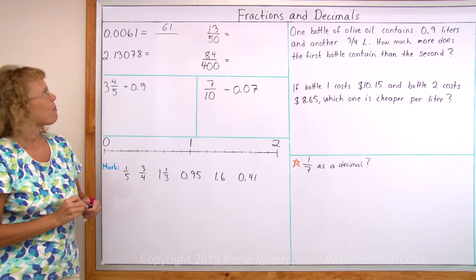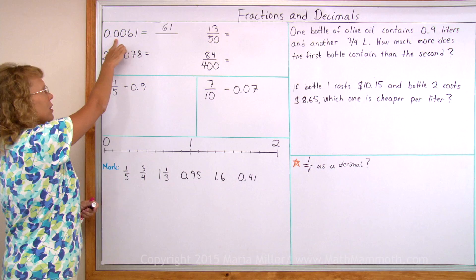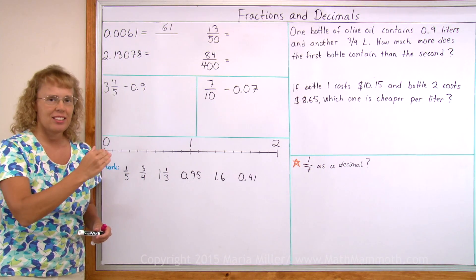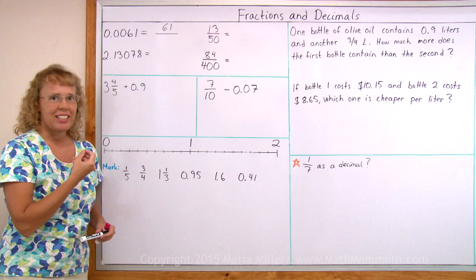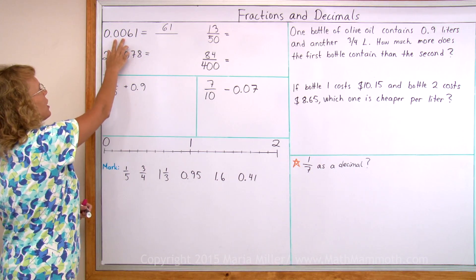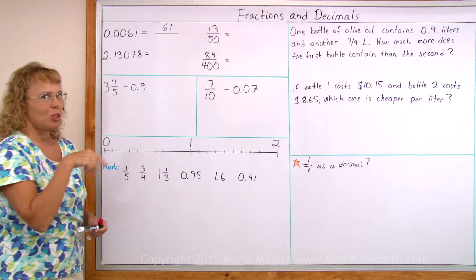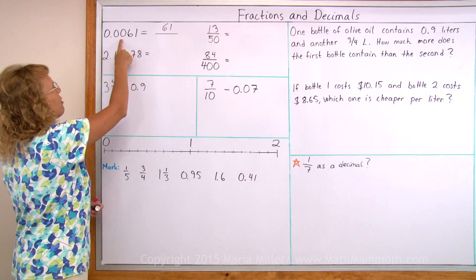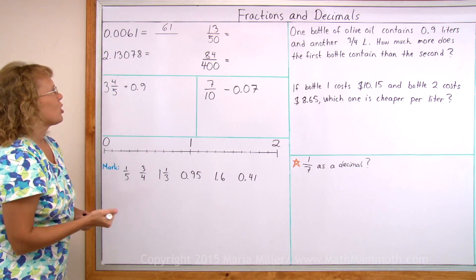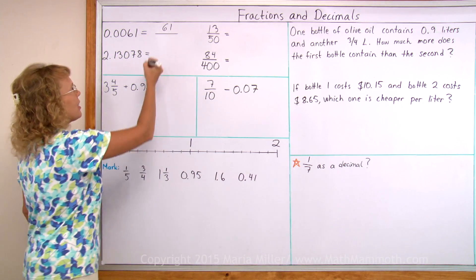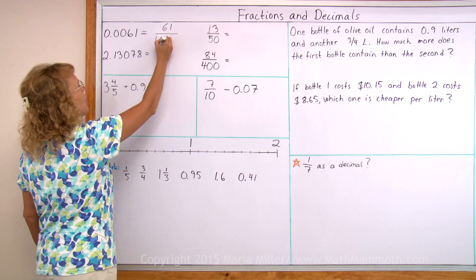And then the denominator. If there was only one decimal digit, if it was 0.9, you would have 9 tenths. Your denominator would be 10. If you had two decimal digits, your denominator would be 100 with two zeros in it. Now we have four decimal digits. So my denominator will be a power of 10 that has four zeros, one followed by four zeros.